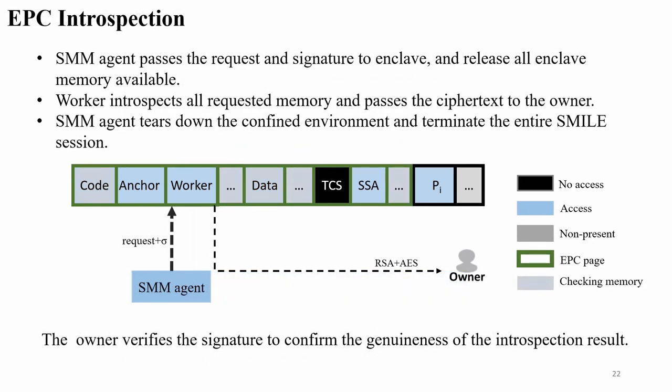Once the enclave is verified as genuine, the SMM agent passes the request and the signature to the enclave and releases all enclave memory. Then the worker introspects all requested memory and passes the signed result to the owner. The SMM agent shuts down the confined environment and terminates the entire SMM execution. Upon receiving the introspection result, the owner verifies the signature to confirm the correctness of the introspection result.